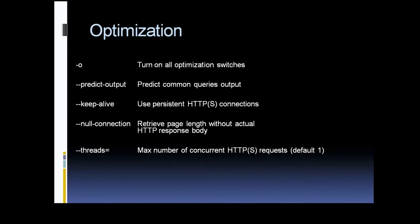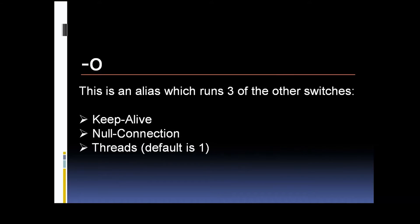So let's go to the first one here, the TACO. This one is just an alias which runs three other switches. So if you're running SQL Map and you use TACO, it's actually going to run keep alive, null connection, and threads at the same time. That's basically all this TACO option does, and as we go through this I'll cover what each of these other switches do.